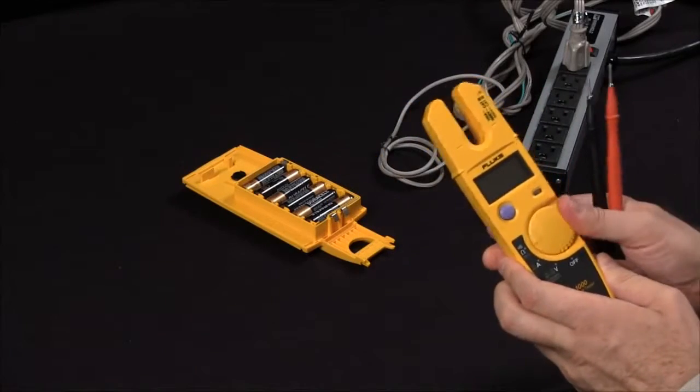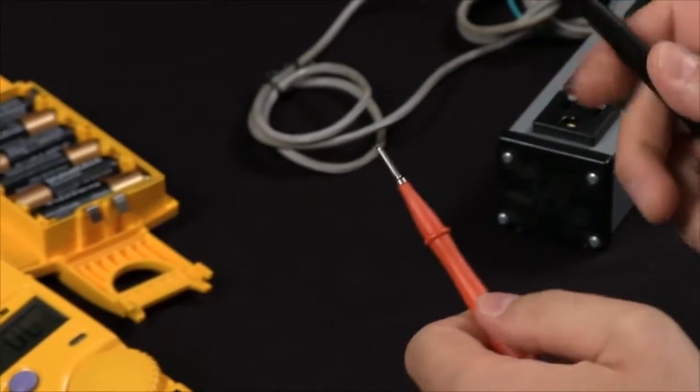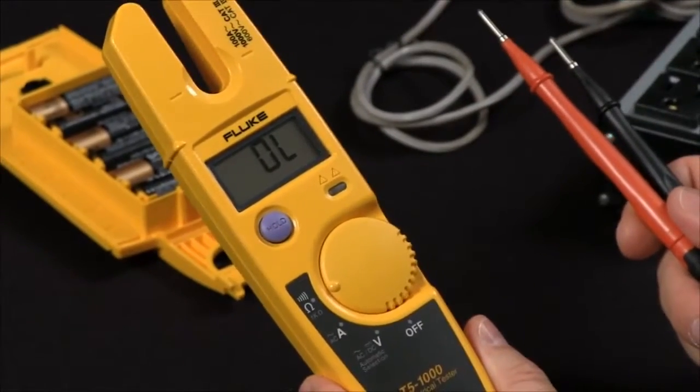Let's start off by making a continuity measurement. All you do is touch your test leads together, showing you that you do have continuity. You can also measure resistance up to 1000 ohms.